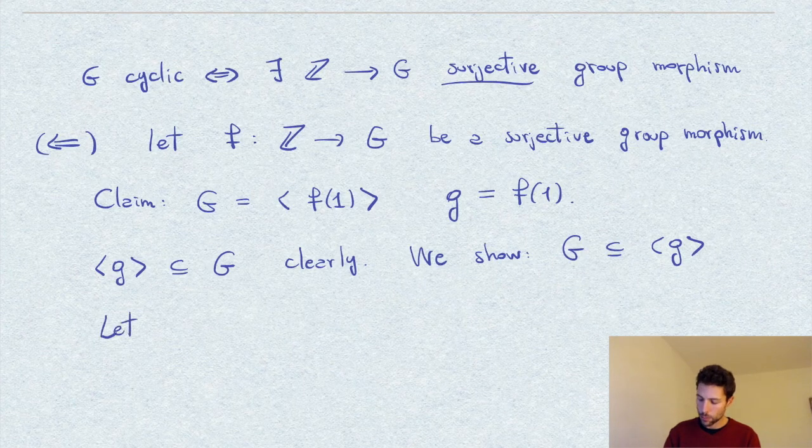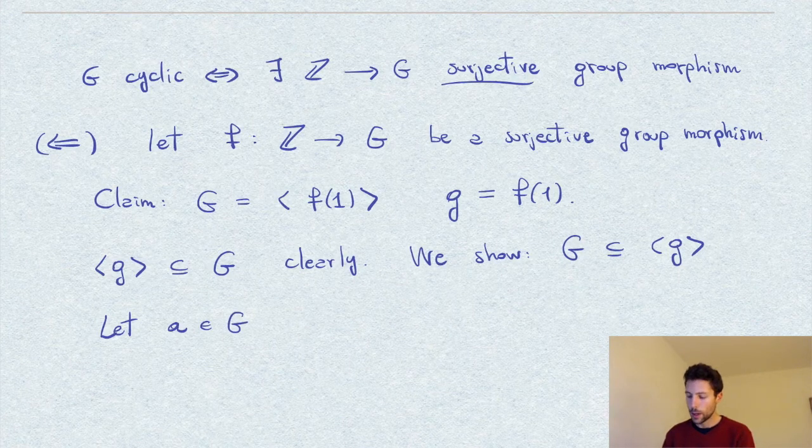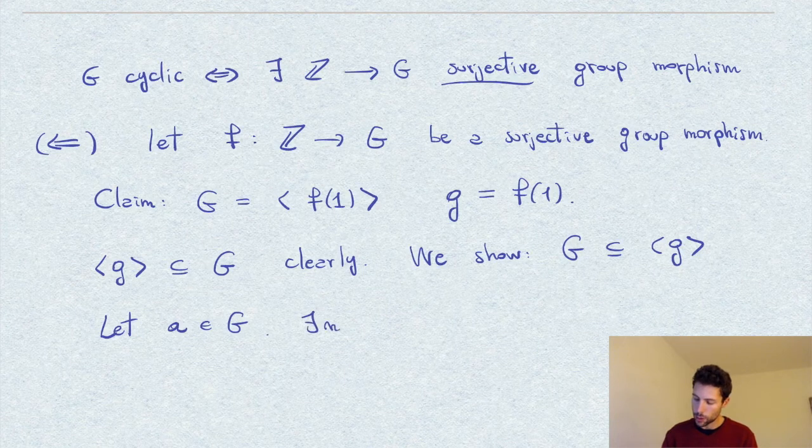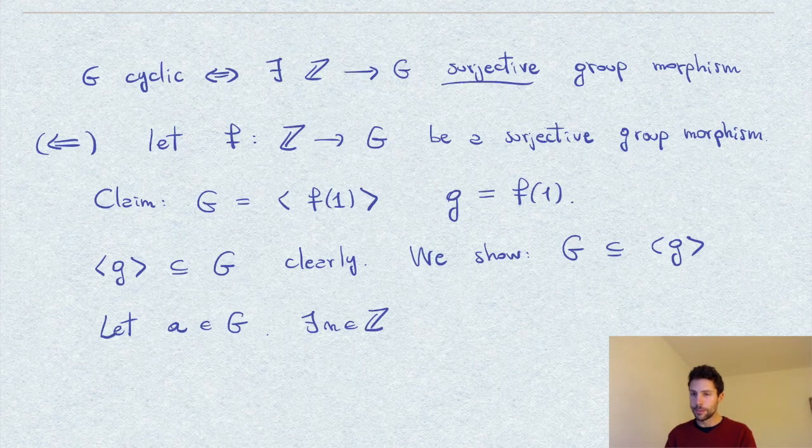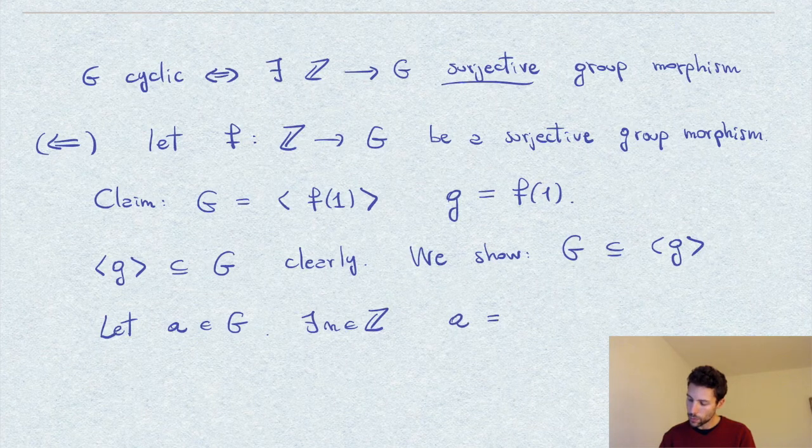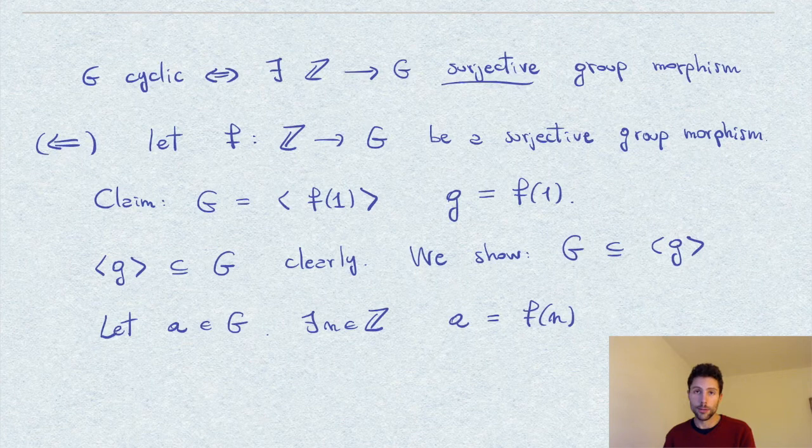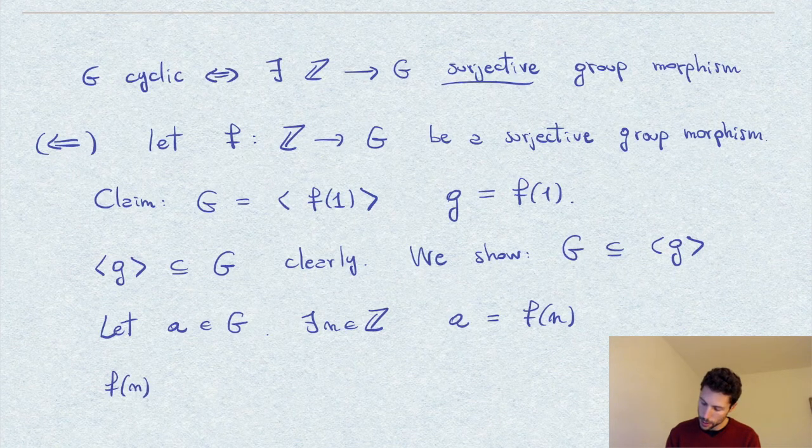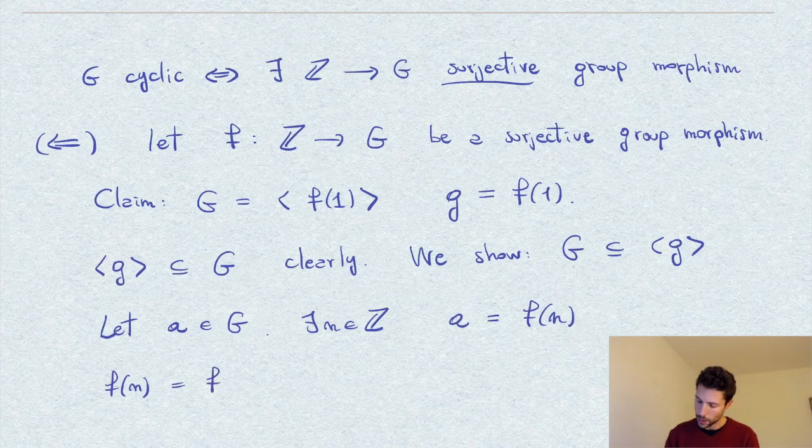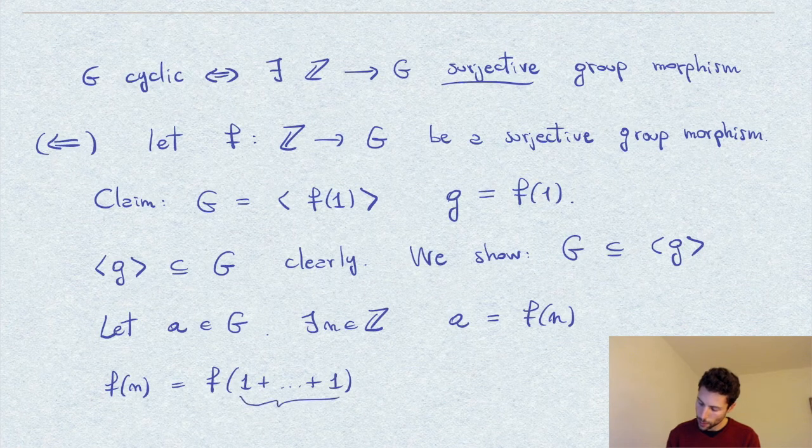So suppose I pick an element a in the group. Now for some, so there exists n, for some integer, a will be f of n. So here I am using that our morphism f is surjective by assumption.